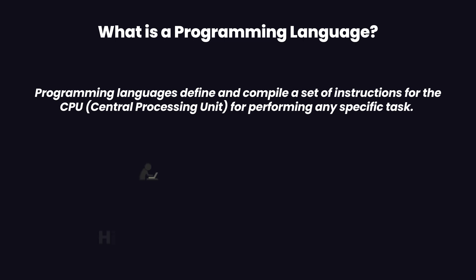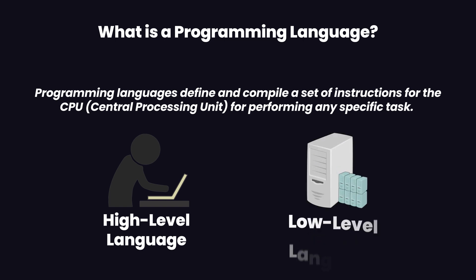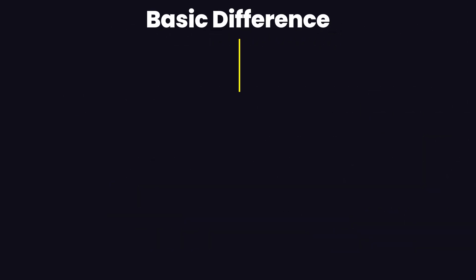To simply differentiate between high level and low level languages: high level languages are those that any programmer can understand, compile, and interpret more easily as compared to the machines. Machines, on the other hand, are capable of understanding low level programming languages more feasibly than human beings. So low level languages are closer to machines, and high level languages are closer to human beings.